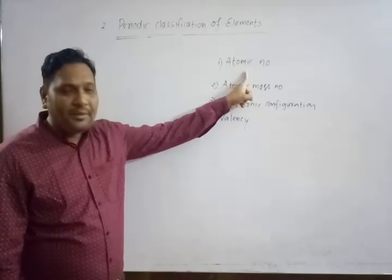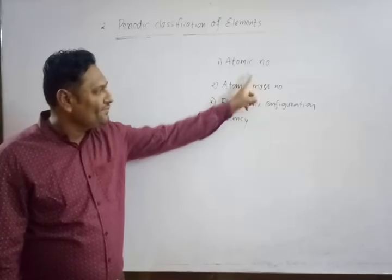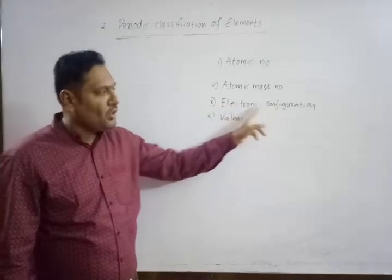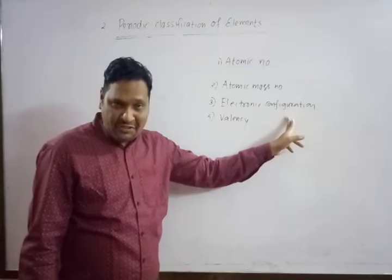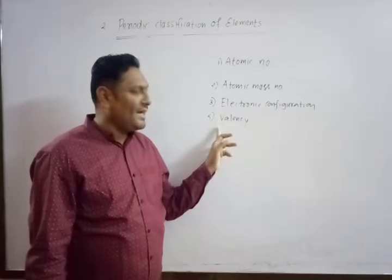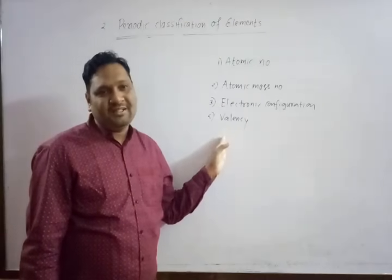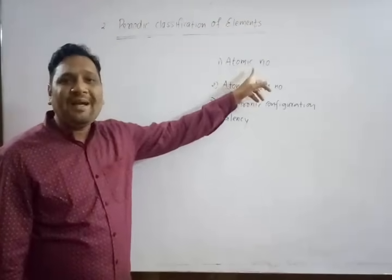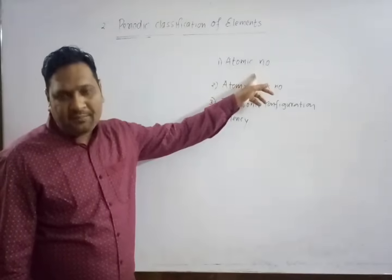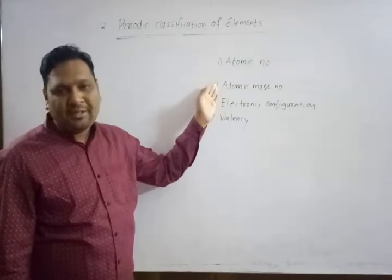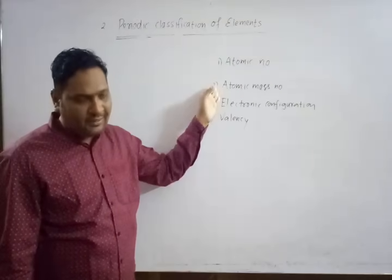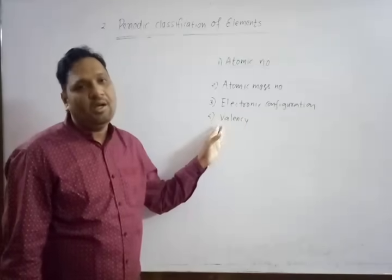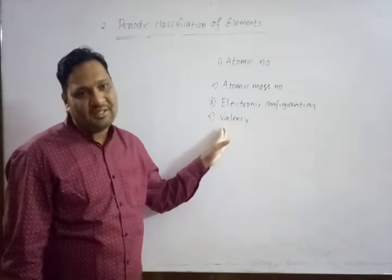The basic terms are: atomic number, atomic mass number, electronic configuration, and valency. So we have to know what is meant by each of these terms.